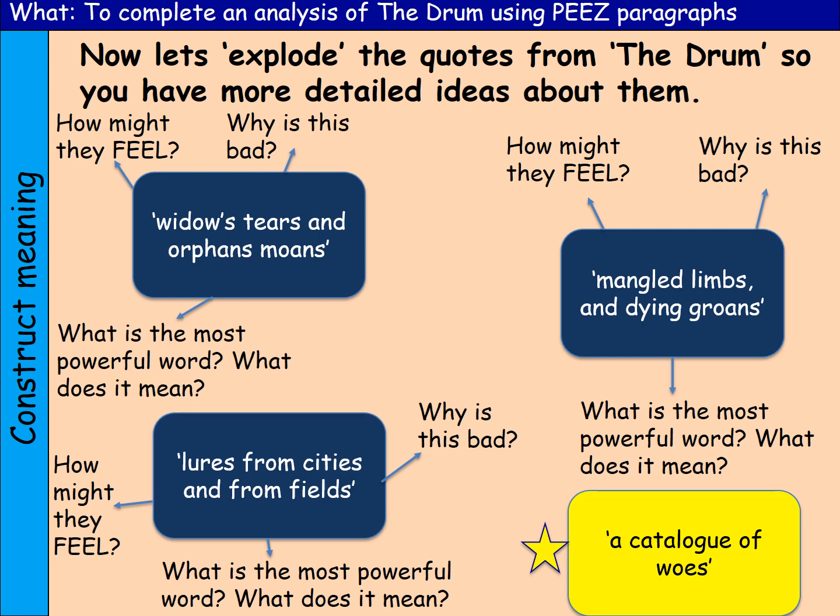So the first one I'm looking at is 'Widows' Tears and Orphans' Moans'. Thinking about: how might they feel, why is this bad, what is the most powerful word and what does it mean? I'm going to say probably sadness. When I read 'Widows' Tears and Orphans' Moans', I automatically think that someone has lost someone very close to them. The tears that they cry and their moans makes me feel very sad and that they're very alone in the world.